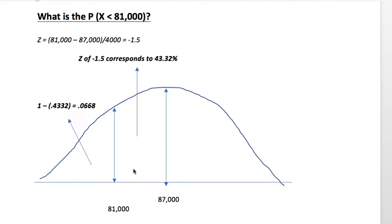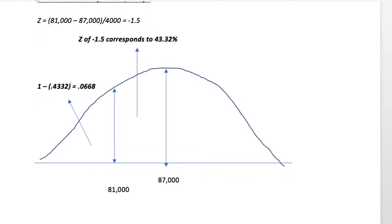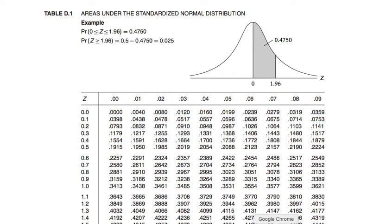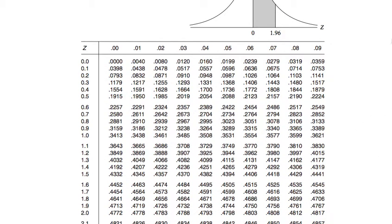Now, to determine the area in question, we want to determine the area to the left of 81,000. So, we've come up with negative 1.5 Z's, and from that standpoint, we want to be able to determine what the area is.